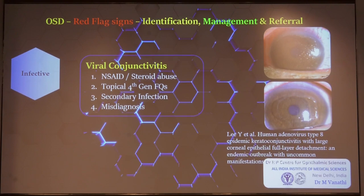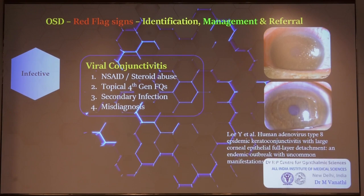Otherwise you risk complicating the ocular surface further. Misdiagnosis as a simple conjunctivitis or epithelial keratitis is another common red flag scenario — you may have missed earlier peripheral or smaller dendritic patterns and are only seeing the case when it has become a geographical ulcer. That is a particular warning sign and you would not want to worsen the scenario in such a case.